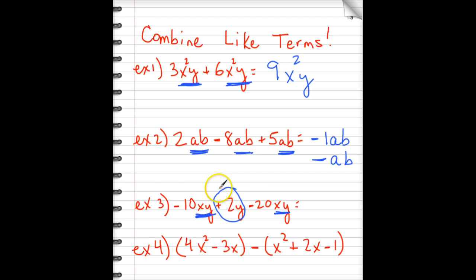It cannot be combined with the amounts of xy. So first, I'll combine our xy stuff. We have negative 10xy, and then down yonder, we have minus 20. You lose 10, and you lose 20 more. That's a loss of 30xy. And then there's nothing else, there's no other y's to combine this with. So we just recopy our plus 2y.